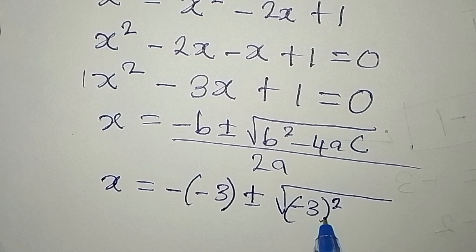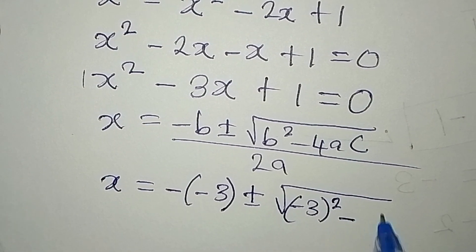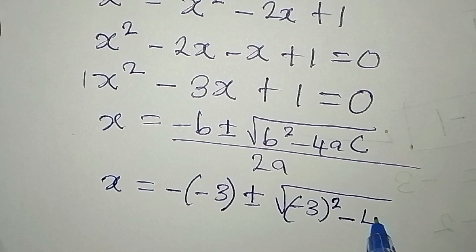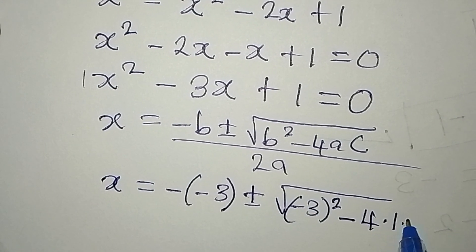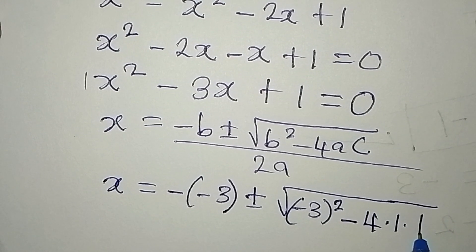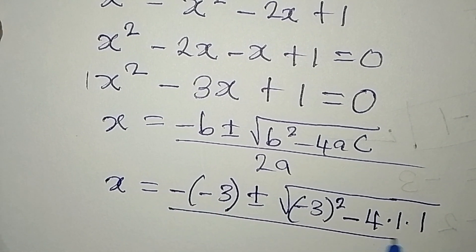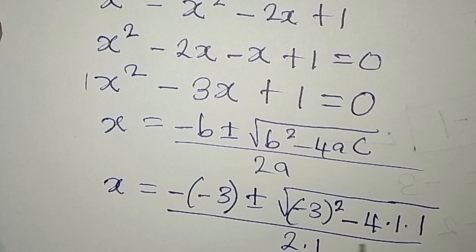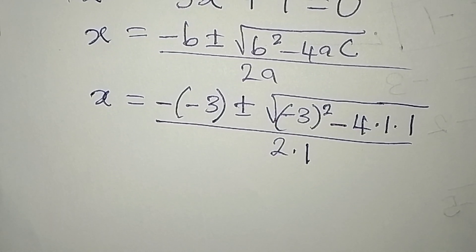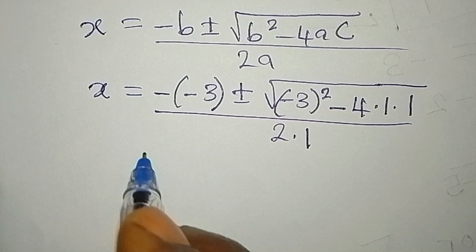Instead of positive 9, which is what we are going to get. Minus 4, a is 1, and c is also 1. So this will be over 2 times a. And our a is 1.